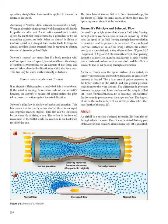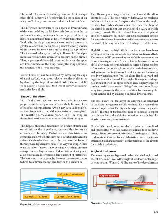Airfoil: An airfoil is a surface designed to obtain lift from the air through which it moves — any part of the aircraft that converts air resistance into lift is an airfoil. The profile of a conventional wing is an excellent example. The top surface of the wing profile has greater curvature than the lower surface, building up the lift force. Air flowing over the top surface must reach the trailing edge in the same amount of time as air flowing under the wing, so it moves at greater velocity due to the greater distance traveled. This increased velocity, according to Bernoulli's principle, means a corresponding decrease in pressure, creating a pressure differential that forces the wing upward. Within limits, lift can be increased by increasing the angle of attack (AOA), wing area, velocity, density of the air, or by changing the shape of the airfoil.